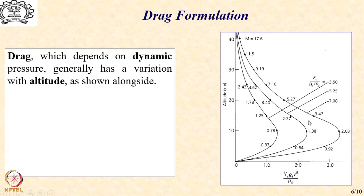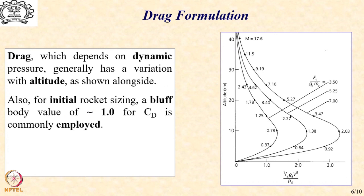It is worth noting that a higher thrust-to-weight ratio indirectly reflects in a higher velocity in the lower atmosphere, so that a higher velocity in a denser atmosphere generates higher dynamic pressure. Now, for actual drag force calculation we need three quantities: the first one is the dynamic pressure, the second one is the surface area which is a given for a given rocket, and the third one is what is commonly called the non-dimensional parameter drag coefficient.